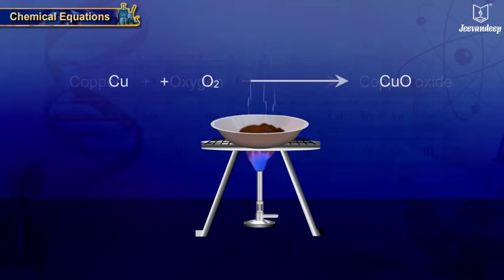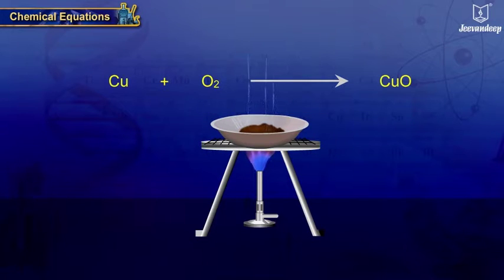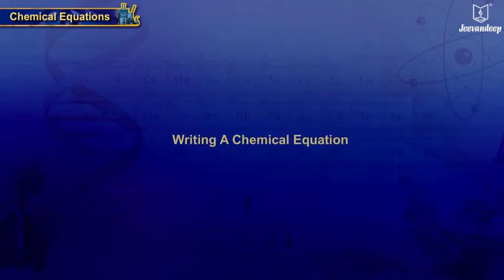We can make it more concise by using chemical formulae as Cu plus O2 gives CuO. Representation of a chemical reaction using symbols of the elements to indicate chemical formulae is a chemical equation.